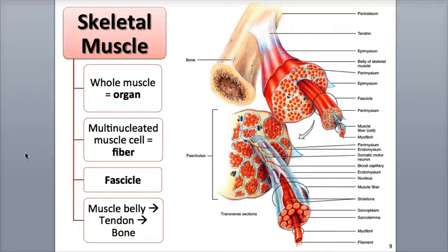The adipose tissue also acts as a protective cushion against physical damage. A dense sheet, or wide band, of dense irregular connective tissue called fascia surrounds and supports muscles, filling in the spaces between muscles, allowing passage of blood vessels and nerves, and binding together muscles having similar functions.